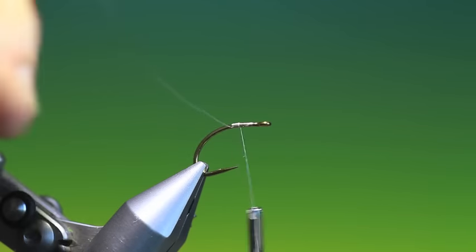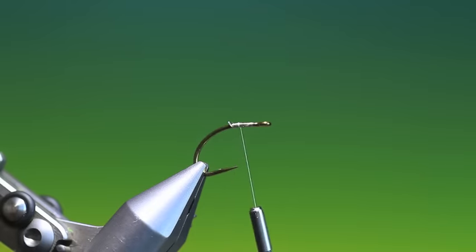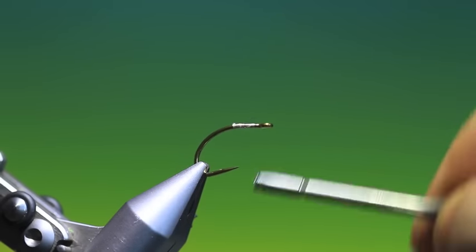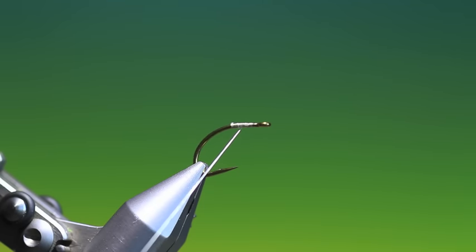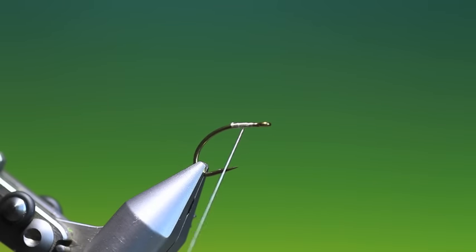So we put the Dyneema on the hook just at the front third of the hook shank. And we just make a little foundation. I take it to the center. And now I put a whip finish just to hold everything in place.